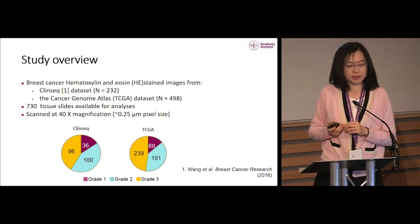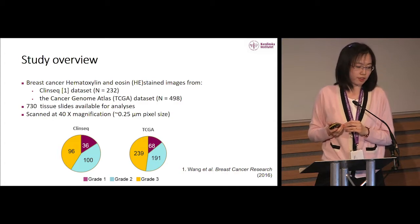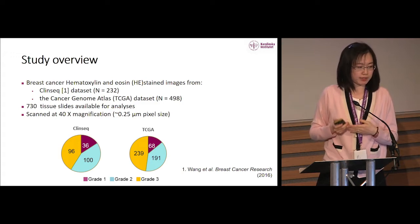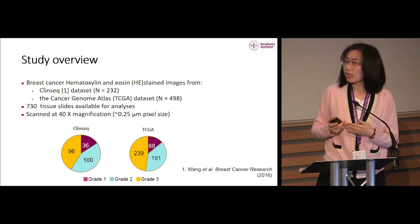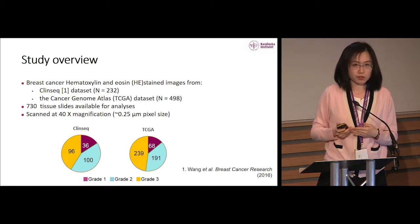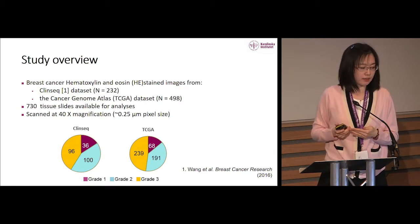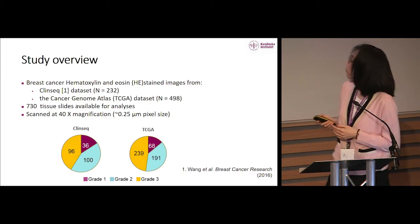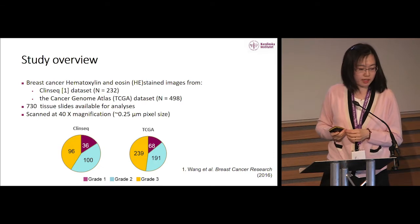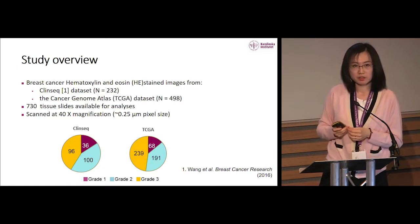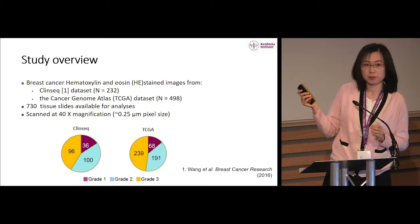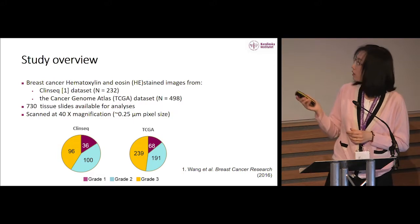The images we use are breast cancer H&E stained images from the ClinSec dataset, which is a Swedish cohort, and also from the TCGA dataset. In total, we have 730 H&E slides scanned at 40x magnification. The pie charts show the proportion of patients belonging to each histological grade, and the distribution of subtypes is quite similar between the two datasets.